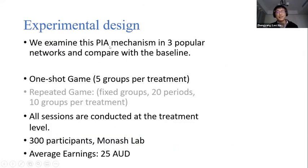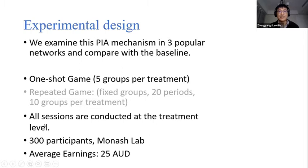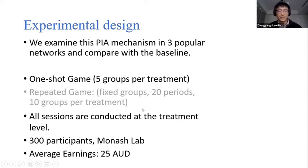We examine this mechanism using a lab experiment. In the interest of time, I only discuss the one-shot game here, but we also conducted a repeated game, which is identical to the one-shot game except that a fixed group of participants interacts for 20 rounds, with only one round selected for payment. We conduct all sessions at the treatment level with instructions read aloud, making the rules common knowledge. In total, we have 300 participants. This experiment was conducted at the Monash Lab of Experimental Economics before COVID, with an average earning of 25 Australian dollars per participant.